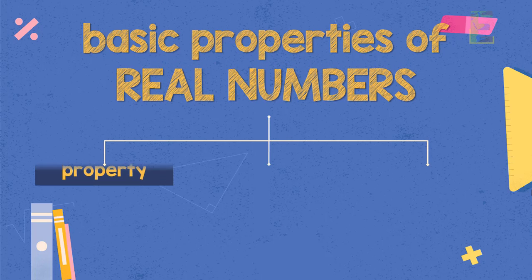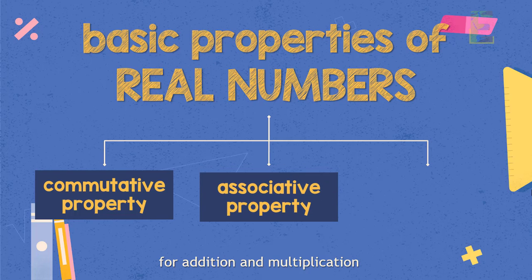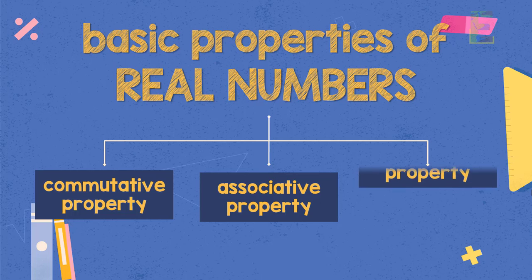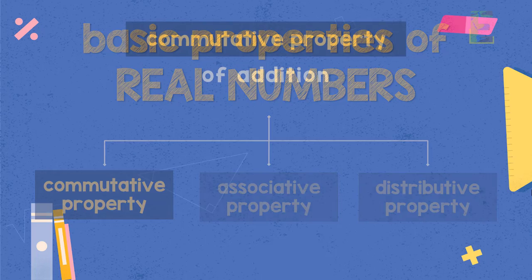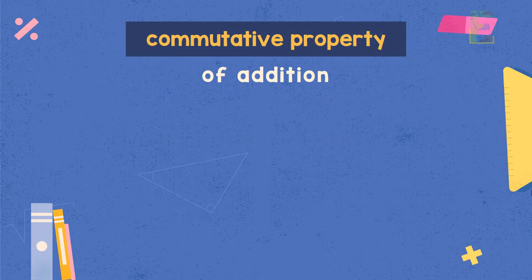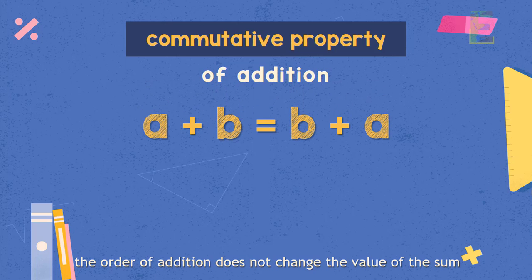The three basic properties are: the commutative property for addition and multiplication, the associative property for addition and multiplication, and the distributive property. Let's discuss first the commutative property of addition and multiplication. The commutative property of addition tells us that the order of addition does not change the value of the sum.